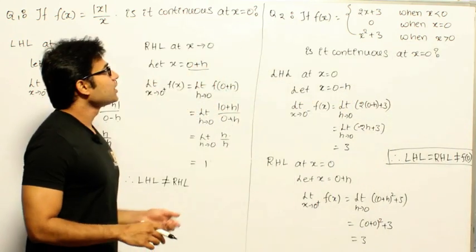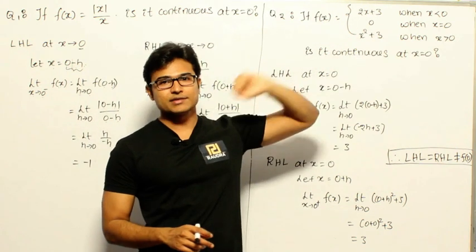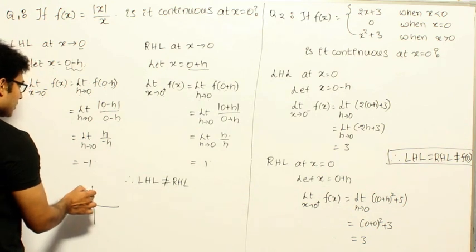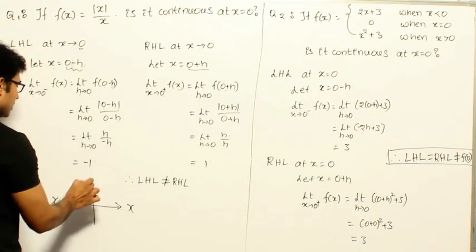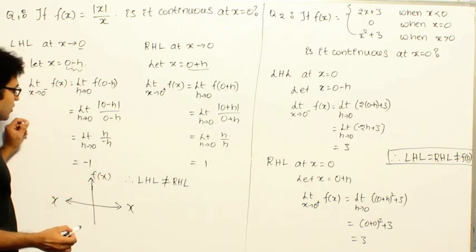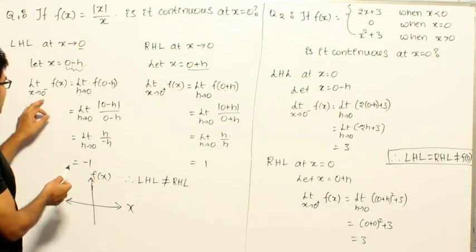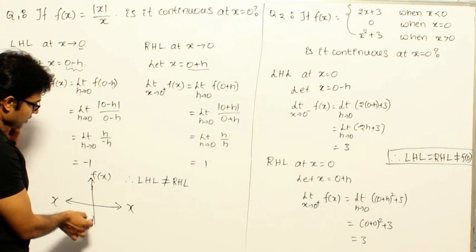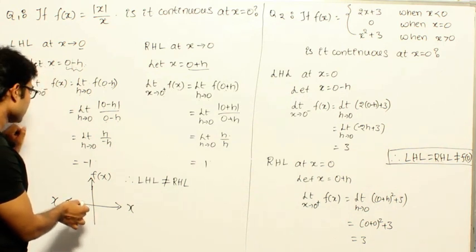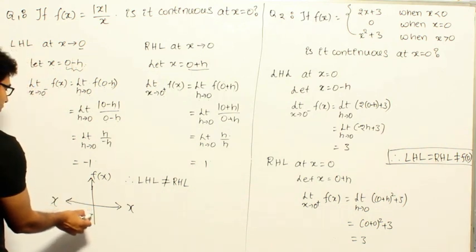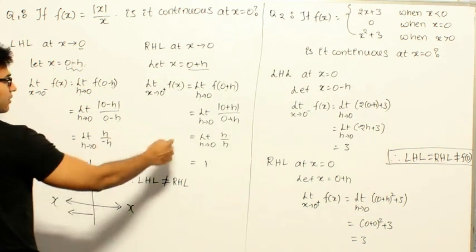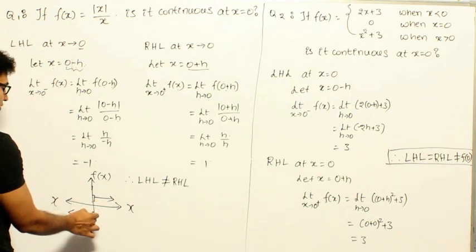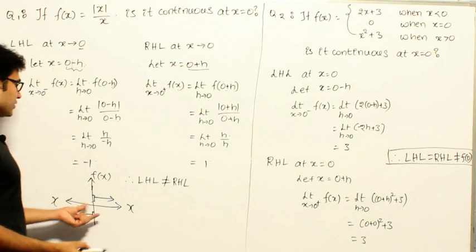We can also see this graphically. Plotting f(x) vs x: for x less than 0 (left side of 0), the value of f(x) is −1; for x greater than 0 (right side of 0), the value of f(x) is +1. But at x = 0 it is not defined. There is a gap between these two points — a jump discontinuity. That is why the function is not continuous.